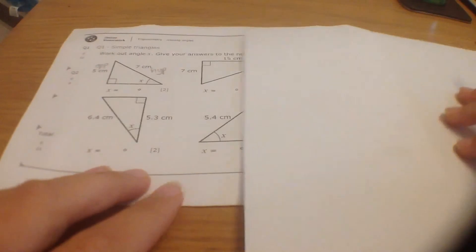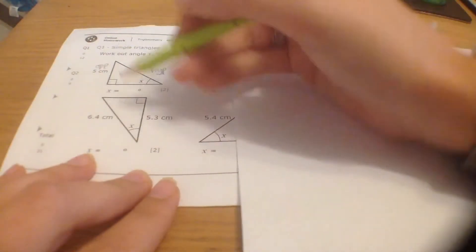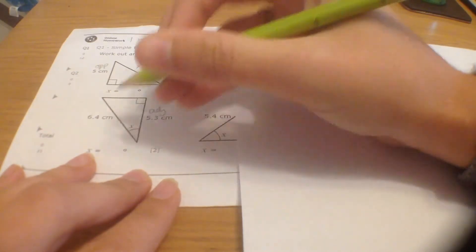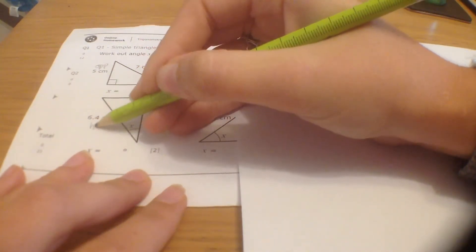Let's look at the one below. So we've got X. This is the adjacent, because it's next to the side. And this is the hypotenuse.